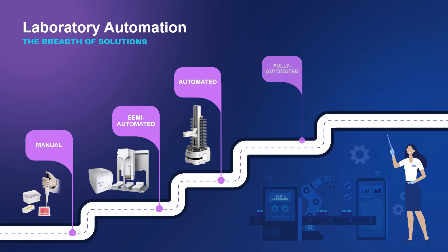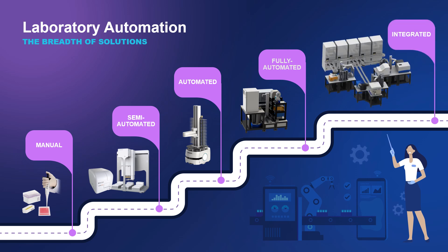We then move up to automated setups that can include transport technologies such as mobile robots to move samples between different instruments. Then we go to fully automated work cells with a centralised arm, perhaps on a rail, with instruments mounted around that arm — some on dockable carts to allow them to be moved between work cells. And finally, we have fully integrated systems where multiple automated work cells create a cohesive system, using conveyors and rails to move samples between different work cells and connected storage devices.